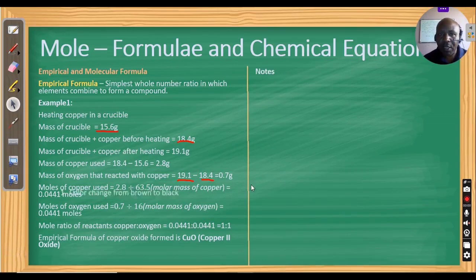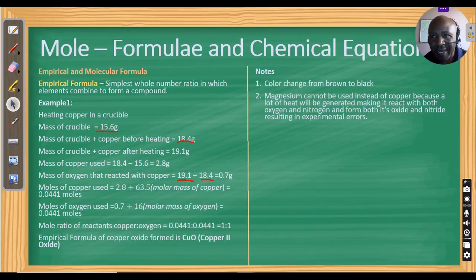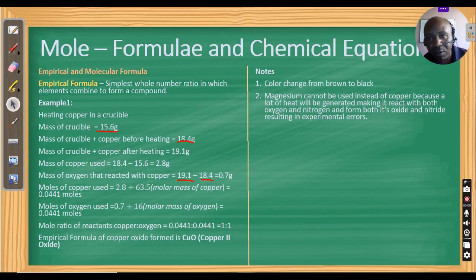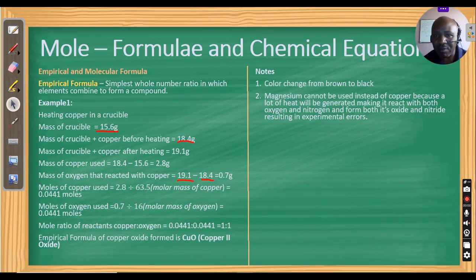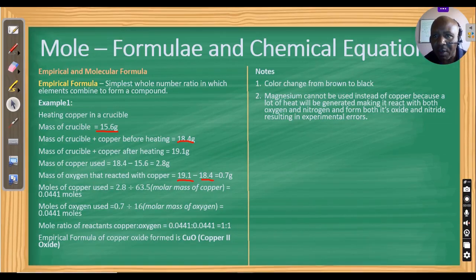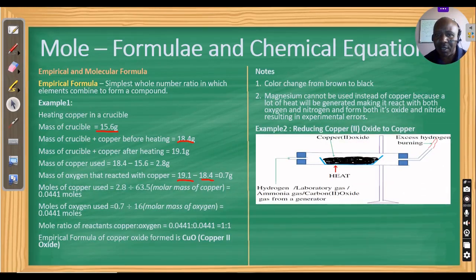Some notes from that experiment: there is a color change from copper to copper oxide, which is brown to black. Magnesium cannot be used instead of copper in this experiment because a lot of heat is generated, making it react with both oxygen and nitrogen, forming both magnesium oxide and magnesium nitride, resulting in errors.